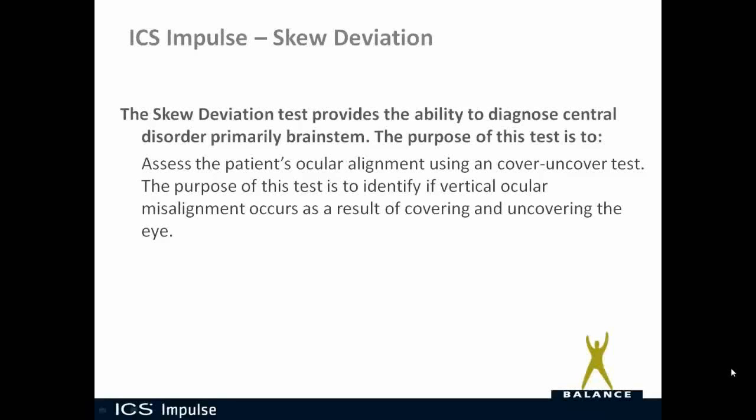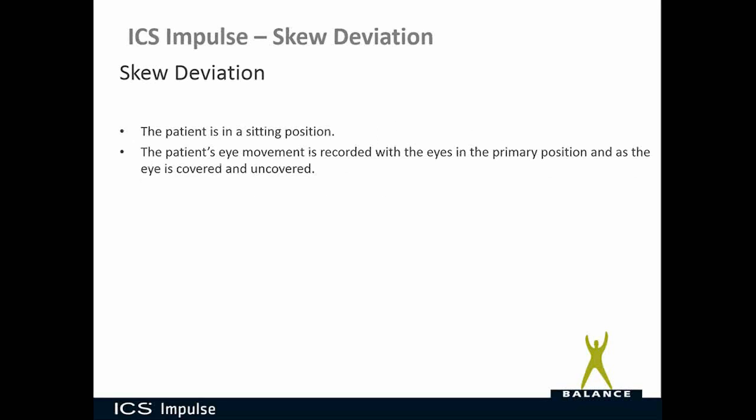The skew deviation test provides the ability to diagnose central disorders primarily in the brain stem. The purpose of the test is to assess the patient's ocular alignment using a cover-on-cover test, and to identify if vertical ocular misalignment occurs as the result of covering and uncovering the eye.